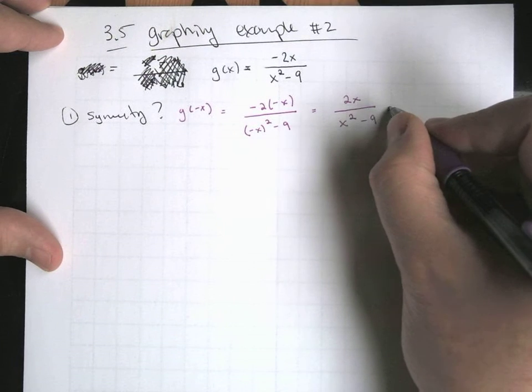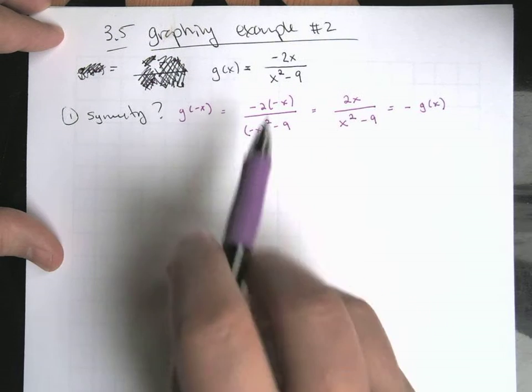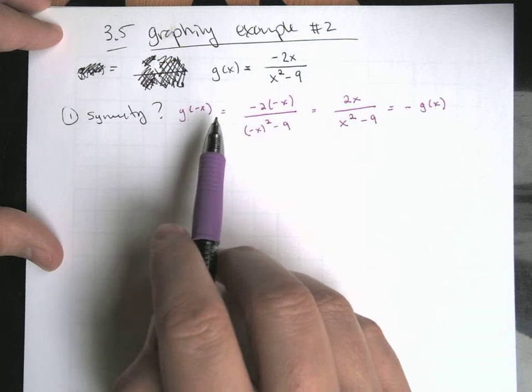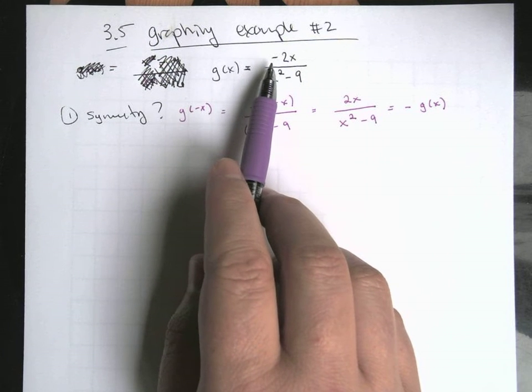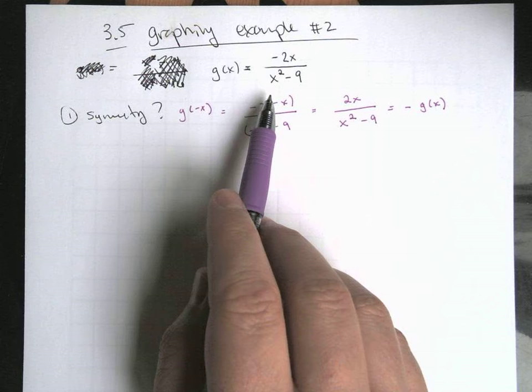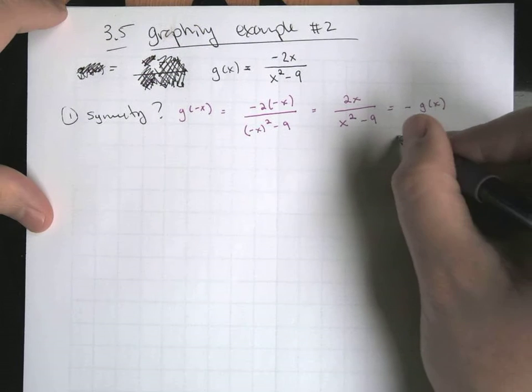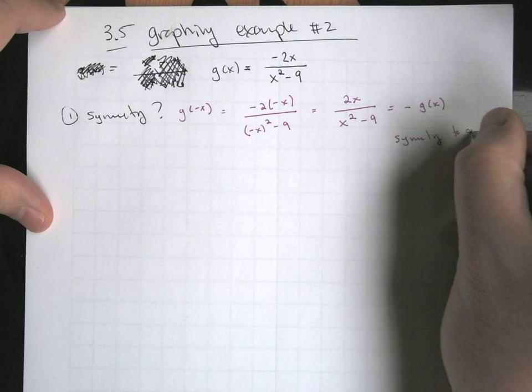This would be the same thing as if we did a negative version of the original g of x. If I did a negative one times the whole thing, I could essentially attach it to the top and flip from negative 2x to positive 2x. And then the bottom would stay the same. So this is going to have symmetry and this is going to be symmetry to the origin.